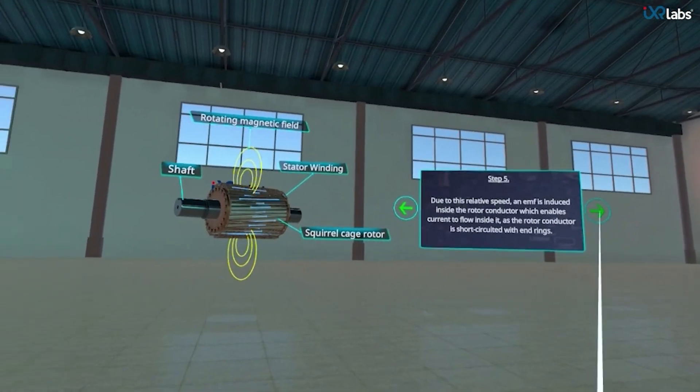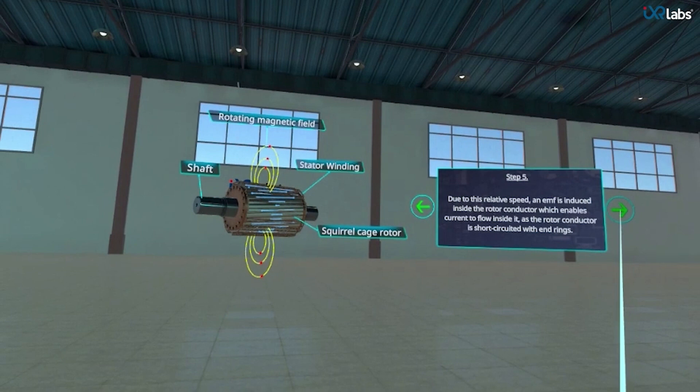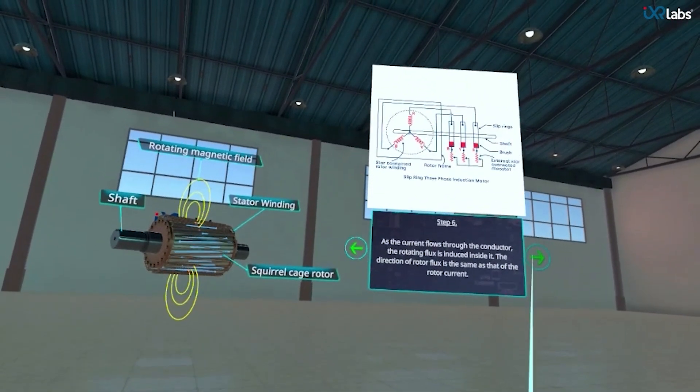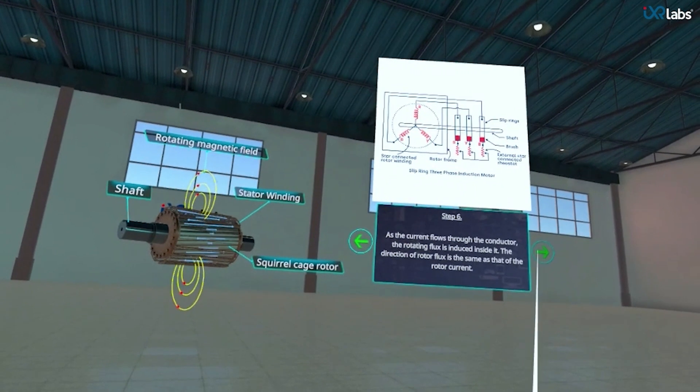In step 5, an EMF is induced inside the rotor conductor which enables current to flow inside it. In step 6, a rotating flux is induced inside the conductor due to the current flow. In step 7, an interaction torque is developed when the current carrying conductor is placed inside the magnetic field.